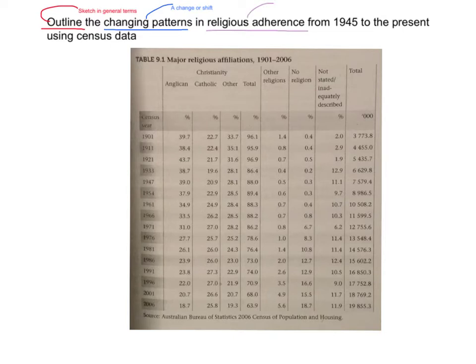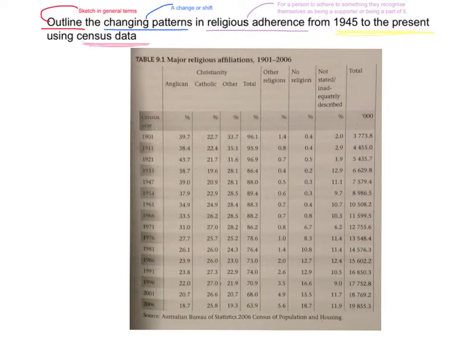But what is meant by the term 'religious adherence'? For a person to adhere to something means that they recognise themselves as being a supporter of or being a part of something. In this case, we're looking at their religious adherence — being a supporter or part of a particular religion. We're also given a timeframe: 1945 to the present. And we're told we need to refer to census data, which tells us we need to support our ideas with evidence.